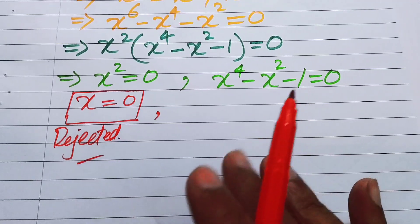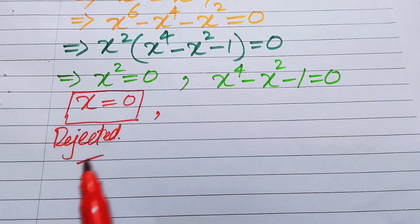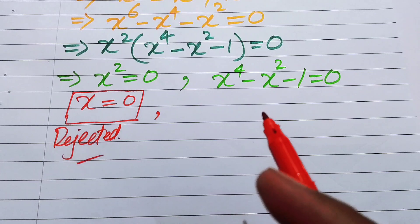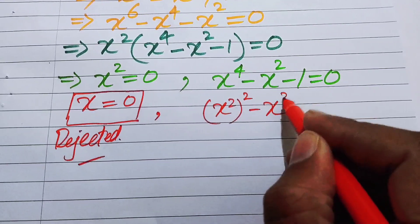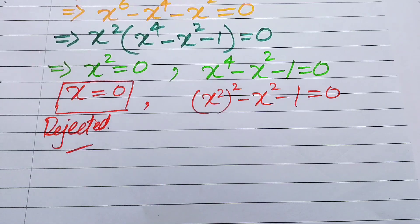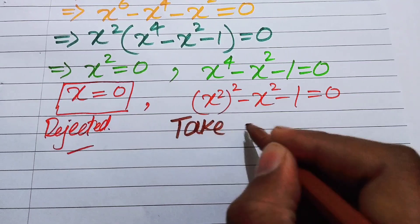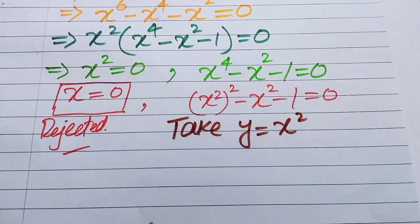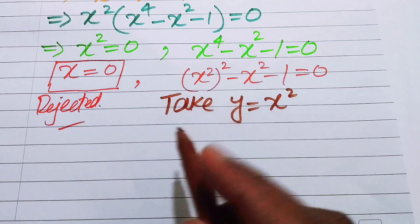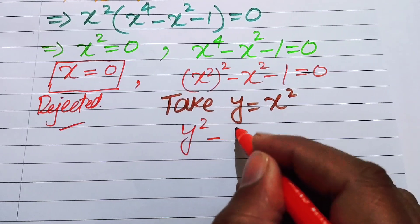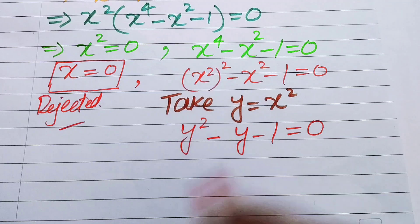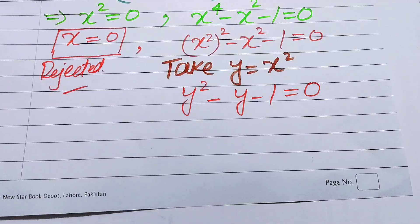We proceed with Case 2 only. We need to find the roots of x⁴ − x² − 1 = 0, which we rewrite as (x²)² − x² − 1 = 0. We convert this to quadratic form by letting y = x², and substituting gives y² − y − 1 = 0.